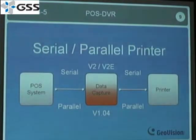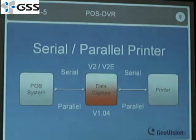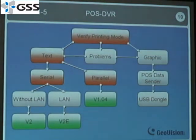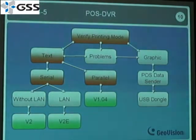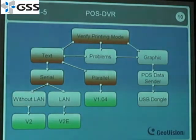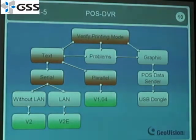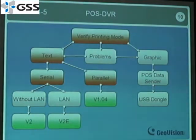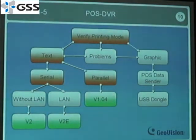Version 1.04 can also support serial port, but since it's an older product, I would suggest you go for V2 or V2E. To reorganize this information: if you have a text mode POST system and it uses a serial port printer, you'll need our V2 or V2E data capture box. If it uses a parallel port printer, you'll need data capture box version 1.04. I'll continue with the serial port here.